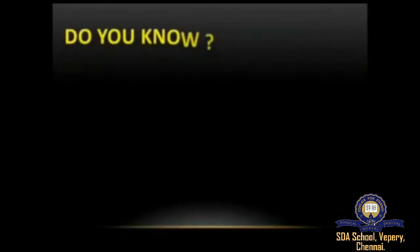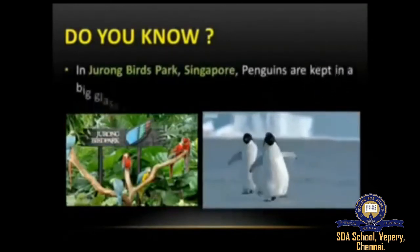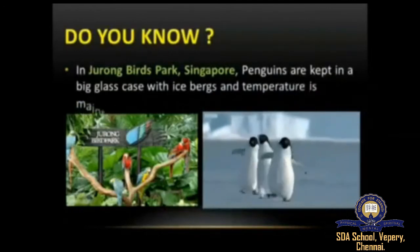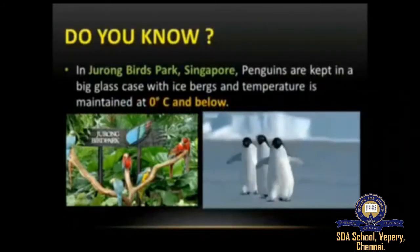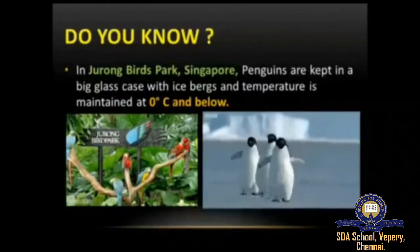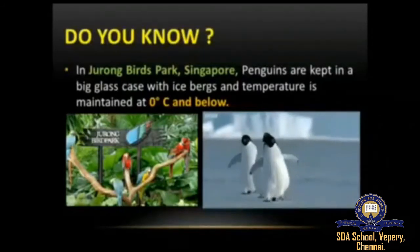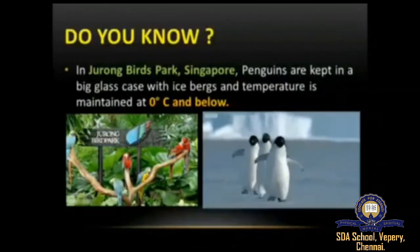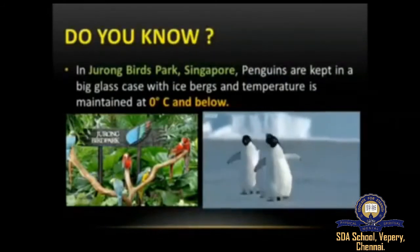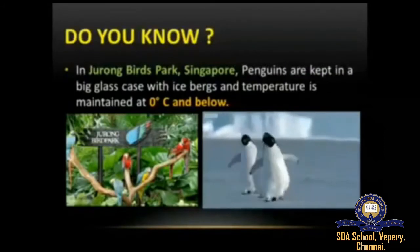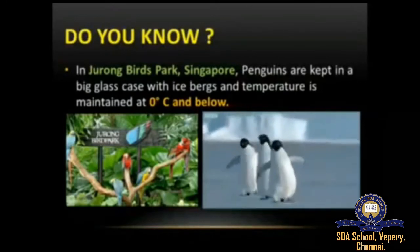Did you know that in Jurong Birds Park, situated in Singapore, penguins are kept in a big glass case with icebergs and the temperature is maintained at zero degrees Celsius and below? Since polar bears and penguins can only dwell in colder regions, the penguins in Jurong Birds Park are kept in a big glass case filled with icebergs, with temperature maintained at zero degrees Celsius and below.